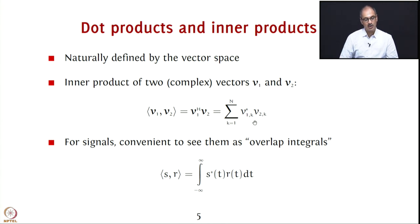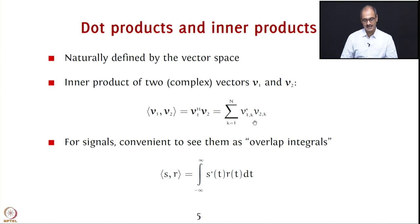The same concept extends to signals. If you assume a signal is a long vector indexed by t, you can define the inner product of signals as an overlap integral. For two complex signals s and r, the inner product ⟨s, r⟩ translates to the integral from minus infinity to infinity of s*(t) · r(t) dt.